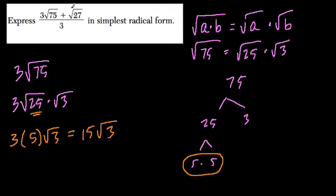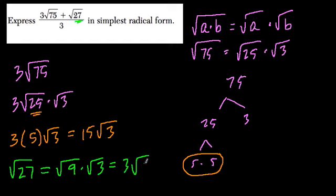Now the next one we can look at is right here, radical 27. Well, that's equal to what? Well, that's equal to radical 9 times radical 3. And that equals what? Well, radical 9 is 3 times the square root of 3.